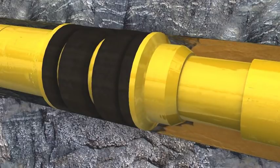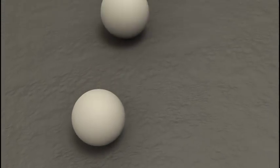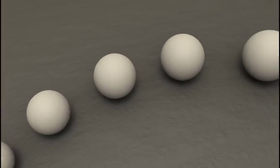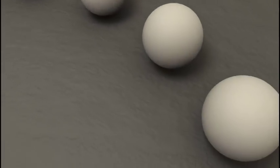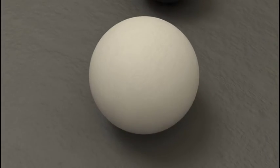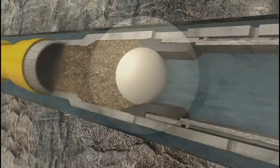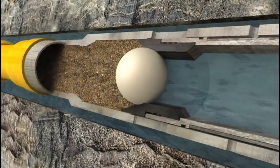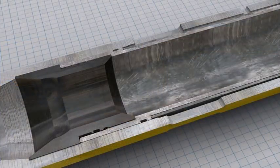Once the first zone is fractured, the second ball is deployed. The balls are sized and designed to seat only in their corresponding frack sleeves. The ball and seat serve two main functions: first, it isolates the lower zone from the frack fluid and pressure, and second, it shifts the frack sleeve into the open position.